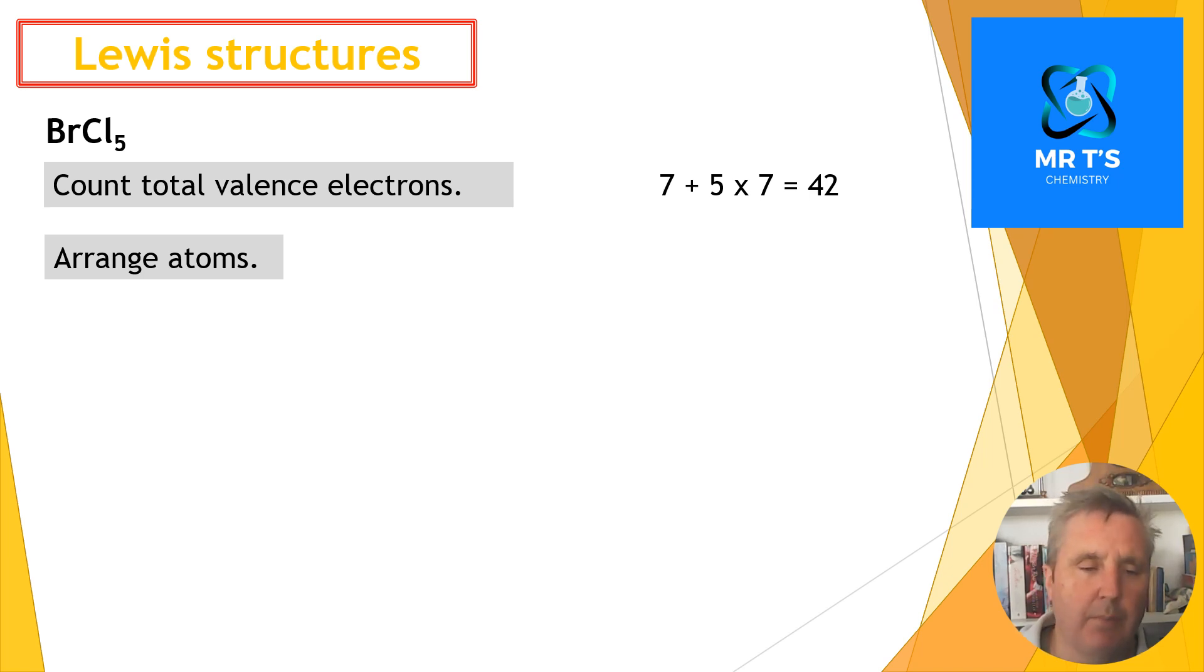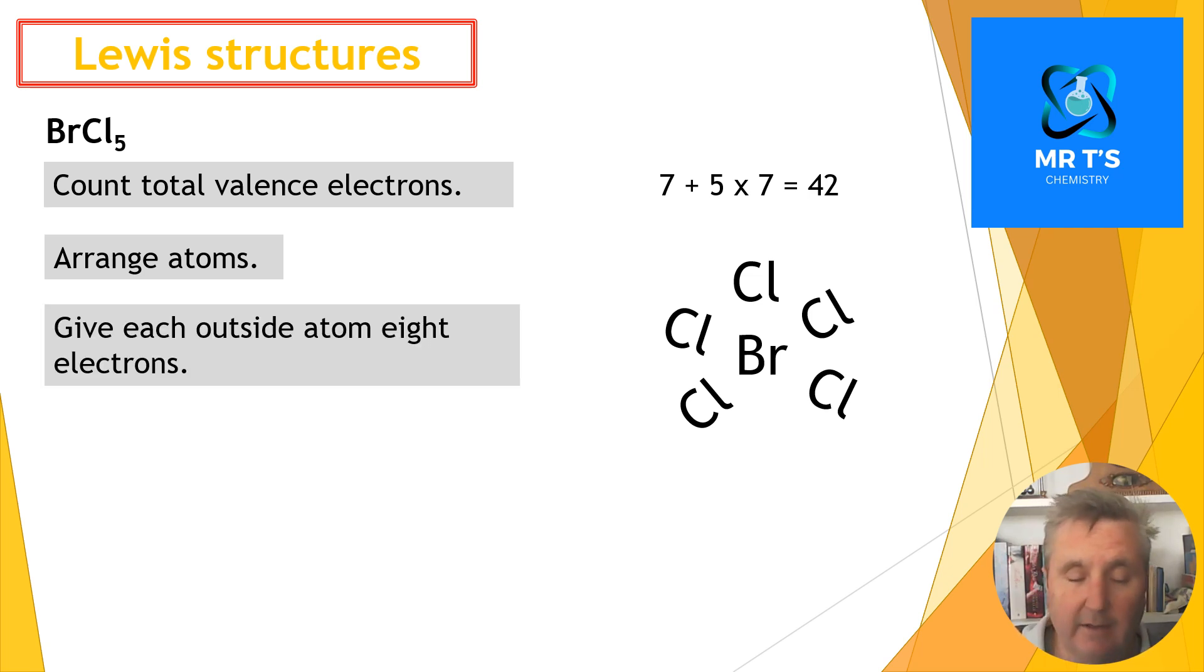We arrange the atoms: we put the bromine atom in the center and around the outside we put the chlorine atoms. Usually it's the atom drawn first that's going to go in the center, or it's going to be the bigger atom. Now we place eight electrons around each outside atom. This is the same as we already know about drawing Lewis structures for simpler molecules—these are all the same rules up till now, apart from we're allowed more than four things around the center atom. So I put these eight electrons around the outside; I've used five times eight, that's 40 electrons. I've got two left.